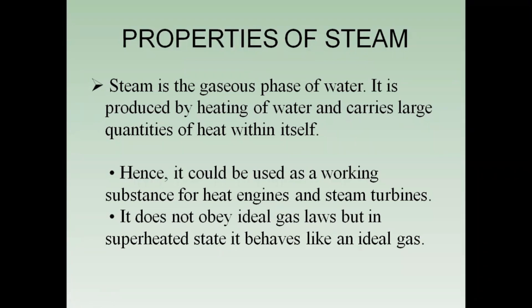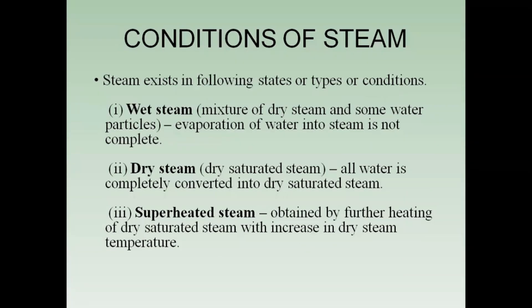Now, properties of steam: steam is basically the gaseous phase of water. It is produced by heating of water and carries large quantities of heat within itself. It can be used as a working substance for heat engines and steam turbines. Steam does not obey ideal gas laws, but in the superheated state it behaves like an ideal gas. The conditions of steam: firstly there is wet steam, which is a mixture of dry steam and some water particles where evaporation is not complete. Then comes dry steam, where all water is completely converted into dry saturated steam. If dry steam is further heated, it becomes superheated steam.